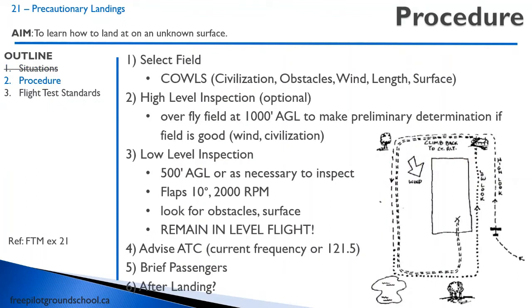So let's discuss this procedure. First, you're going to select a field. I use the acronym CALS. Other people use other acronyms, but CALS stands for Civilization, Obstacles, Wind, Length, and Surface.